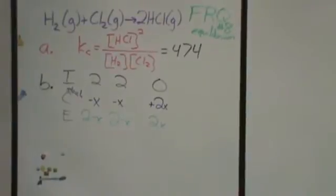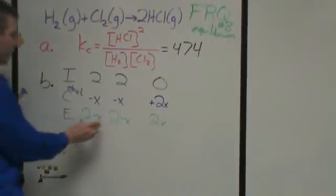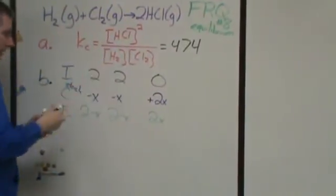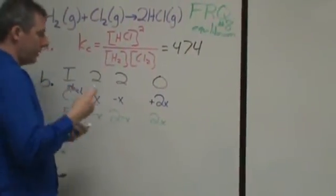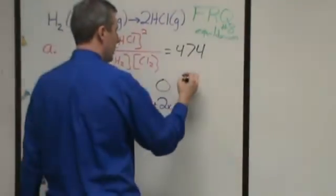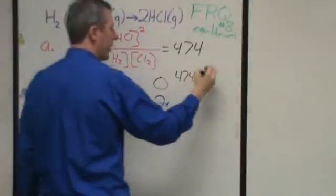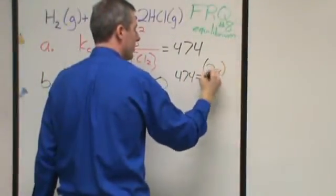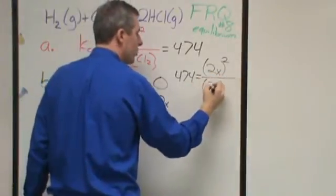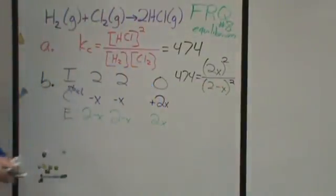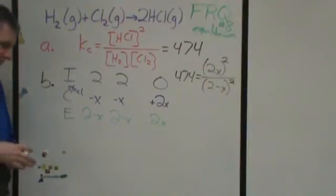And then what I can do with those is I can plug those into an expression up here. At equilibrium, I have 2 minus X of this, 2 minus X of that, and 2X of that. And I know that the product and division of all of those is equal to 474. So what I end up with is 474 is equal to HCl quantity squared. So 2X squared. And then I have 2 minus X times another 2 minus X, so squared. Now, at that point, because I know the equilibrium constant, I can solve for X. So this one is actually quite simple.